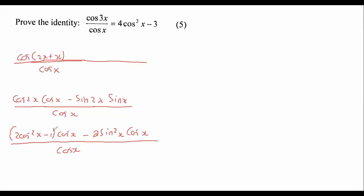What I would then do is just multiply this cos x into the bracket. And so we're going to end up with a cube. That's interesting. That's quite weird. Oh no, it will be okay. So that's cos cubed x minus cos x minus 2 sin squared x cos x over cos x.